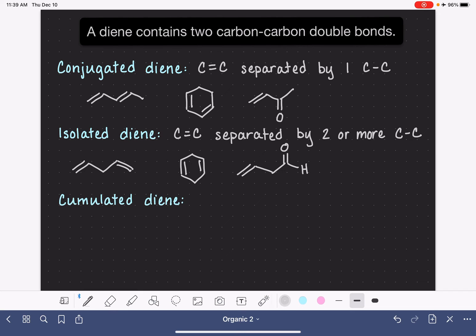Last but not least, we have the accumulated diene. The accumulated diene is one where the double bonds are not separated from each other. This is one where the carbon-carbon double bonds are directly adjacent to each other, in series, or in sequence, not separated by anything.